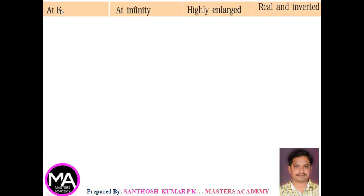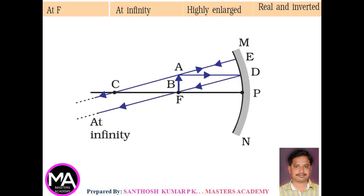Fifth case: when the object is kept at F, the principal focus. AB is kept at F. Consider two rays: one ray parallel to the principal axis, which after reflection passes through the principal focus, and another ray passing through the center of curvature, which after reflection retraces the path. These two rays will meet almost at infinity. So whenever an object is kept at the principal focus, the image is formed at infinity, highly enlarged, real and inverted.